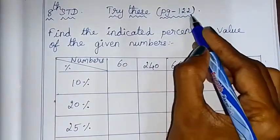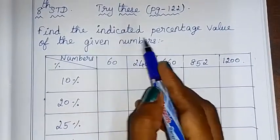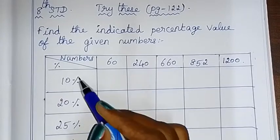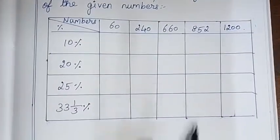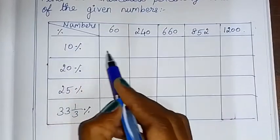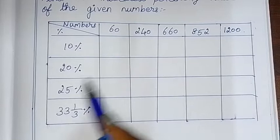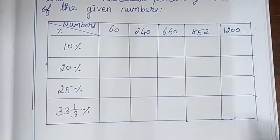Hello, let's try this page number 122. Find the indicated percentage value of the given numbers. So if you want to find the percentage values, you can choose the numbers as 10%, you can choose the numbers as 20%, and you can choose the numbers as 25%, and you can choose the numbers as 33⅓%.